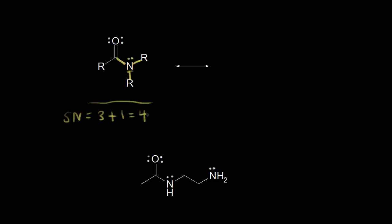A steric number of four means four hybrid orbitals, which implies sp3 hybridization for that nitrogen. And from earlier videos, you know that sp3 hybridization means a trigonal pyramidal geometry for that nitrogen. So that's one way of looking at this functional group, with that lone pair of electrons being localized to that nitrogen.